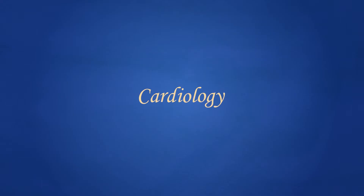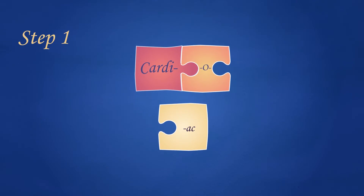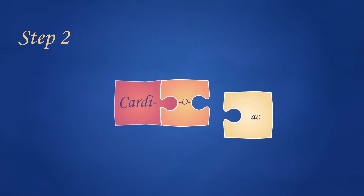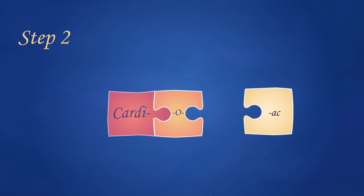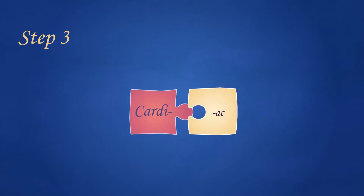Now let's try another scenario, and say that you want to build a medical word with this definition: pertaining to the heart. Step 1: Select the suffix and combining form whose meanings match the definition. Step 2: Change the order of the word parts to put the suffix last. Step 3: Because the suffix begins with a vowel, delete the combining form's vowel and join the two word parts. And the term is cardiac.